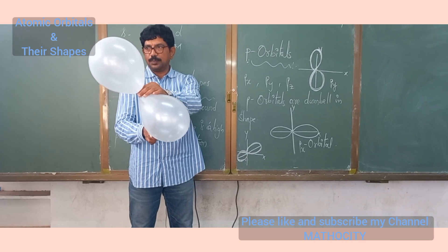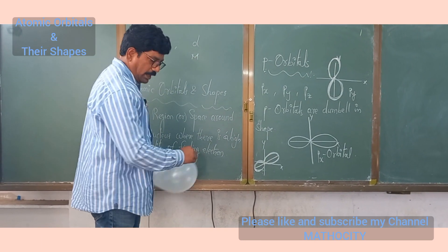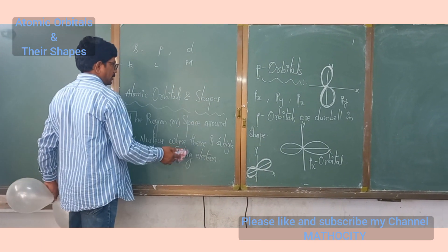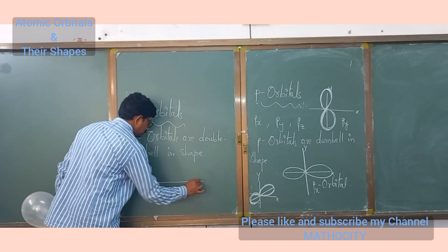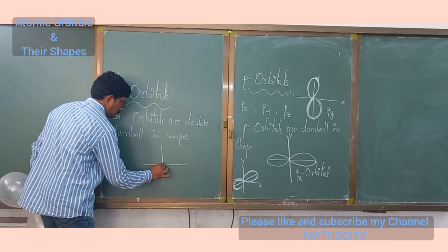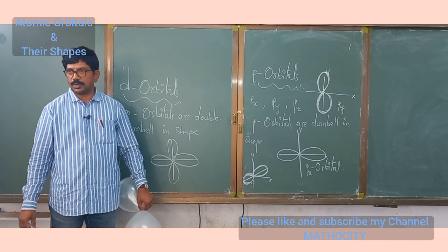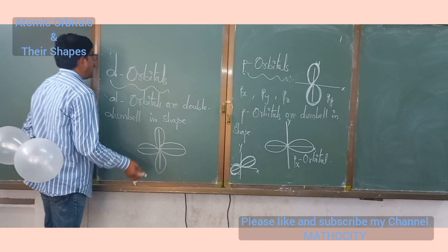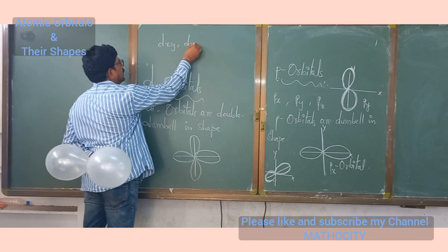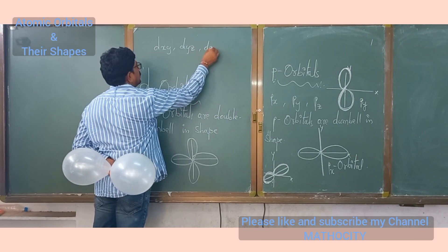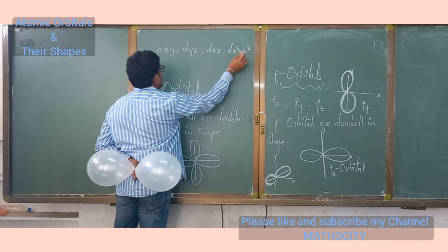Next is the D orbital, which starts from the M shell. D orbitals are double dumbbell in shape. Altogether there are five degenerate D orbitals: Dxy, Dyz, Dxz, Dx²−y², and Dz².